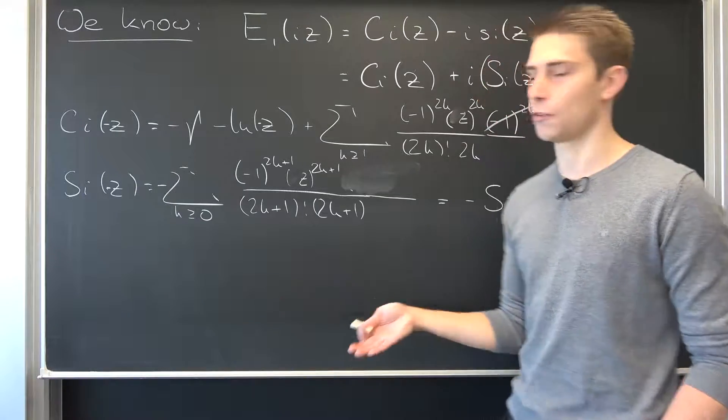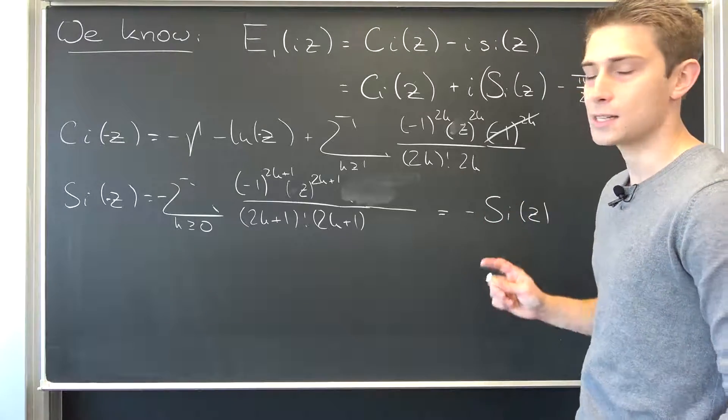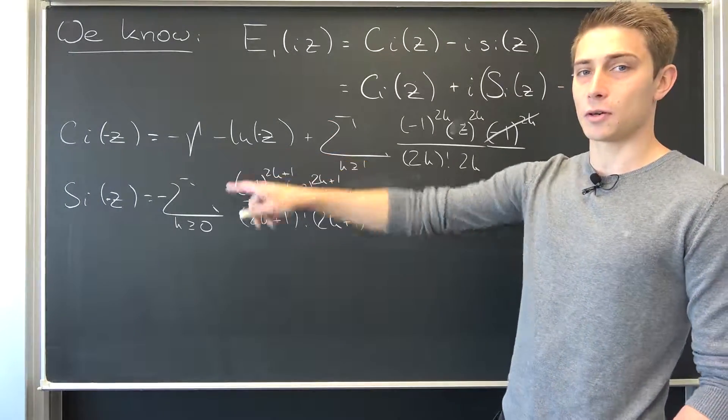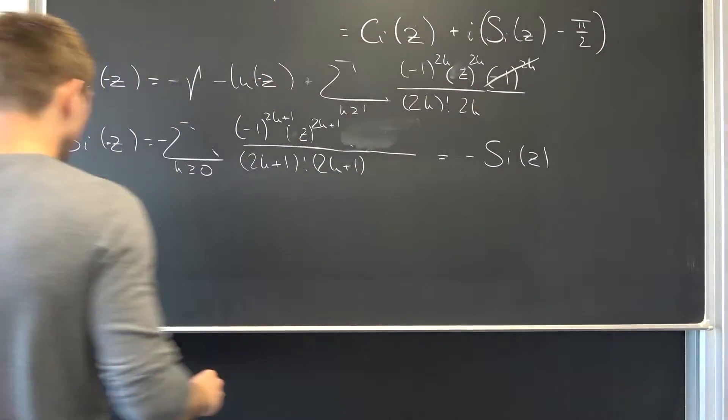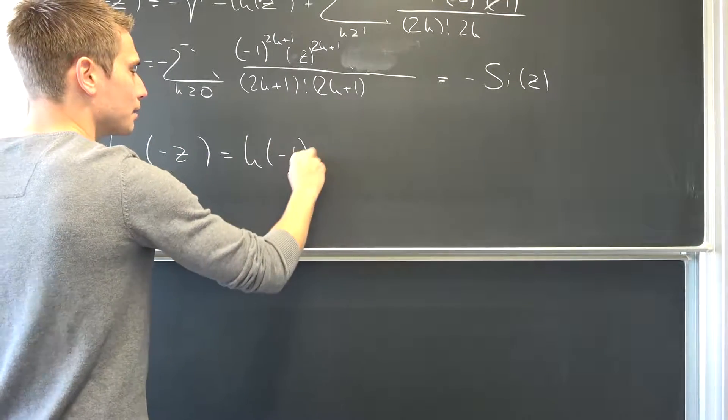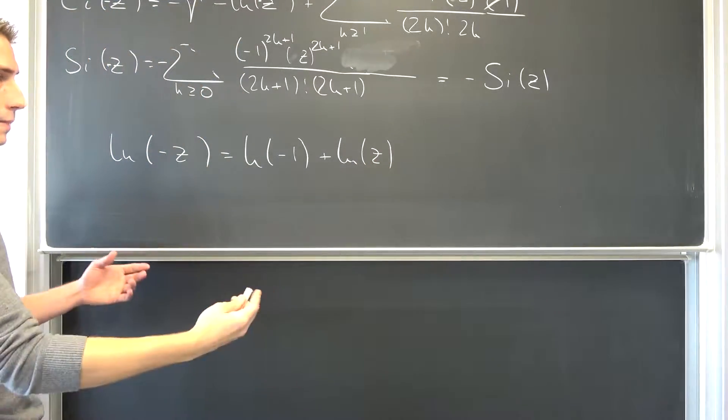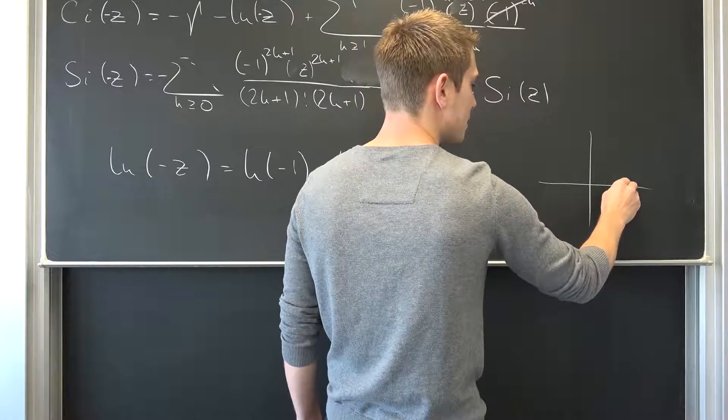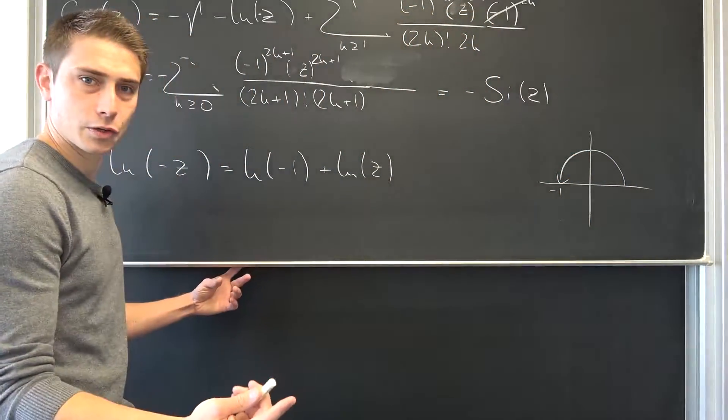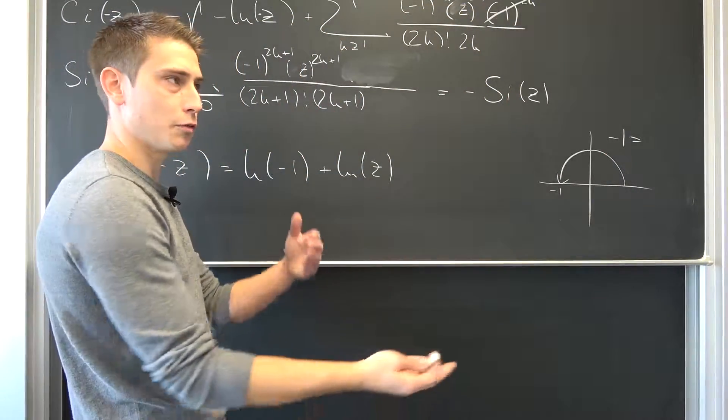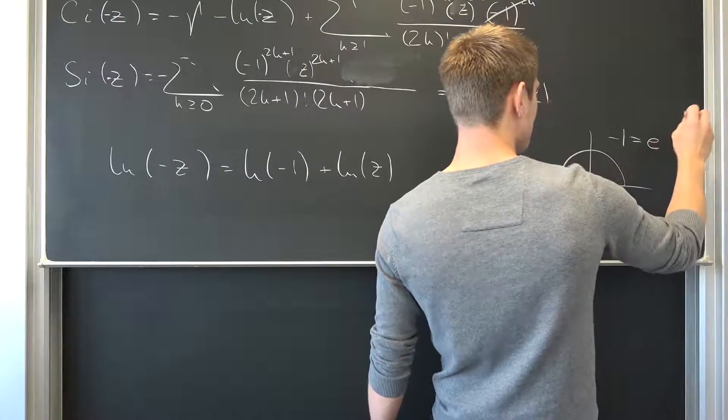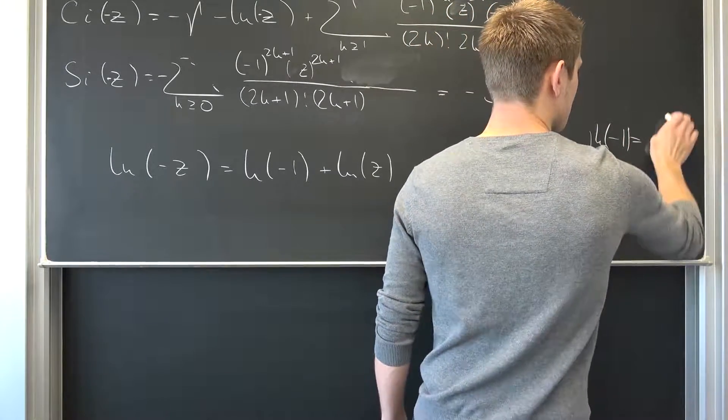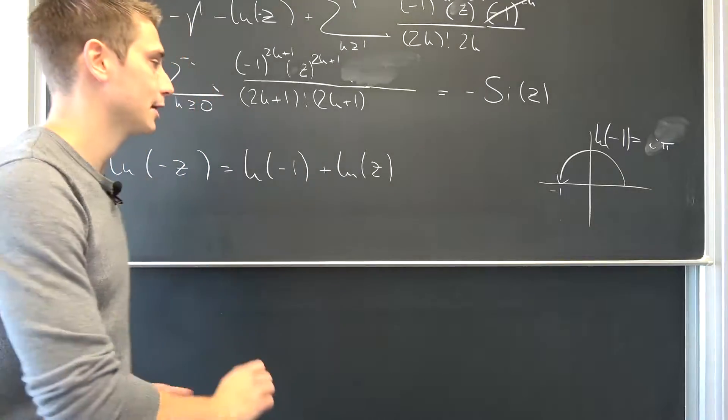But here comes the really trippy part. We are going to, as always, simply consider the principal branch of the logarithm - the log with the capital L. Natural log of negative z, if we only consider the principal branch, we can rewrite the natural log of negative z as being the natural log of negative 1 plus the natural log of z. We can simply have our natural log of z right here, but we also have natural log of negative 1. Now we are going to do some simple complex analysis. Here is negative 1. If we were to express this complex number negative 1, we would end up with a pi rotation in the positive direction, basically e to the i times pi. Now we can take the natural log on both sides, ending up with simply i pi. Natural log of negative 1 is i pi. This is not surprising at all.